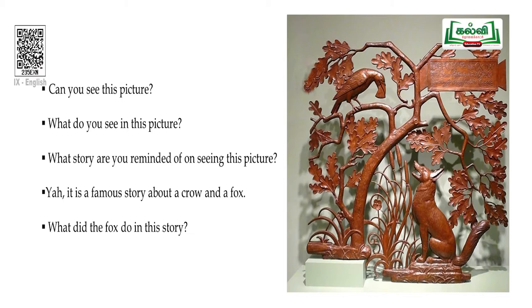Learning outcomes 903 and 922 are those things which we are going to learn through this poem. Can you see this picture? What do you see in this picture? What story are you reminded of on seeing this picture? It is a famous story about a crow and a fox.